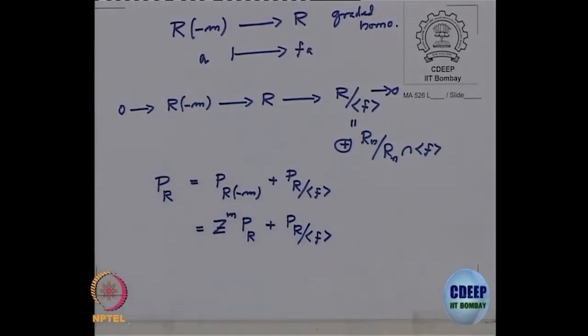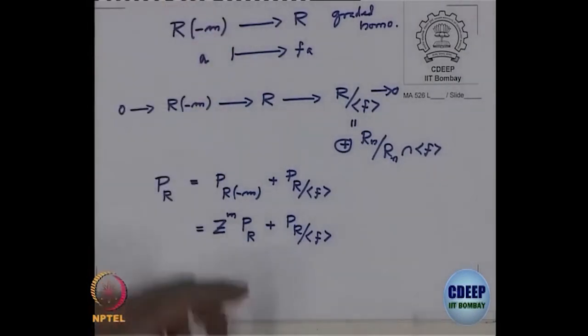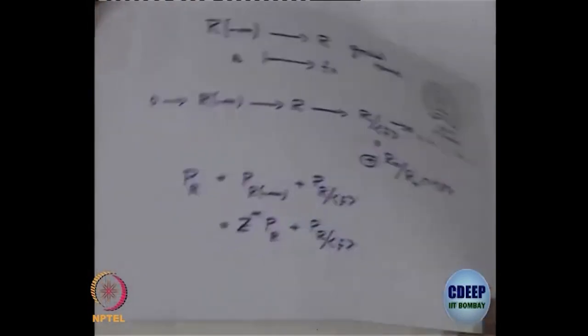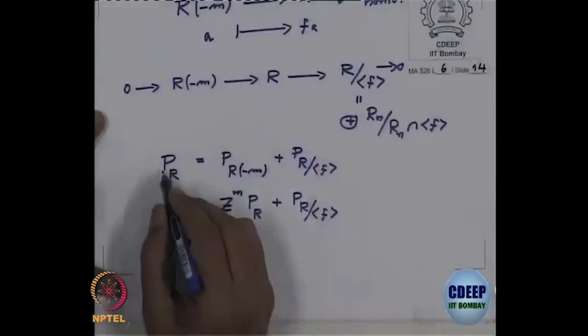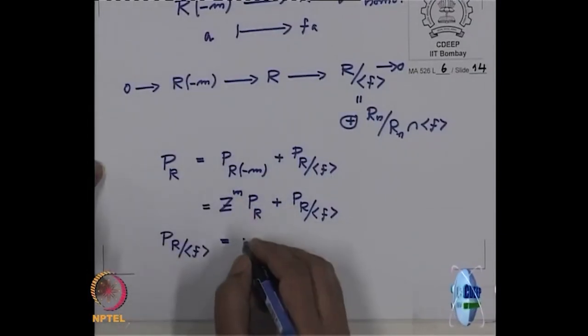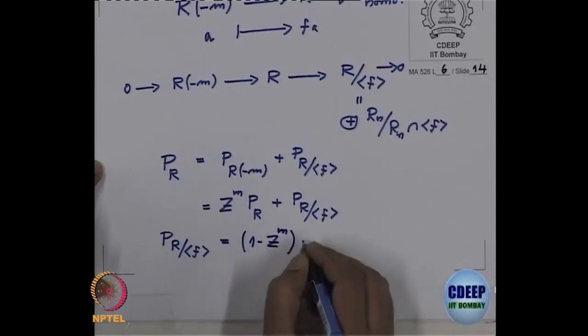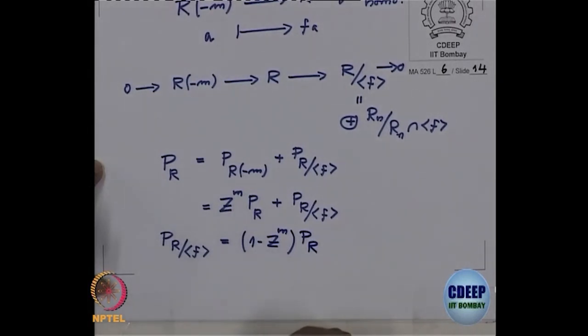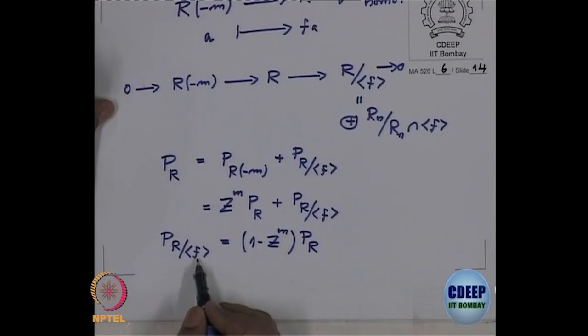And there is nothing special about the ring, I could have done this for a module. The only thing I need to assume is that this homogeneous element F of R should be non-zero divisor for the module M. So let me write now the statement. Let us simplify this a little bit. So we should write this in terms of the other P_R. So P_{R/(F)} is same as, shifting this to the other side, that means (1 - Z^M) times P_R. So if you want to compute the Poincaré series modulo F, then we have this inductive formula.